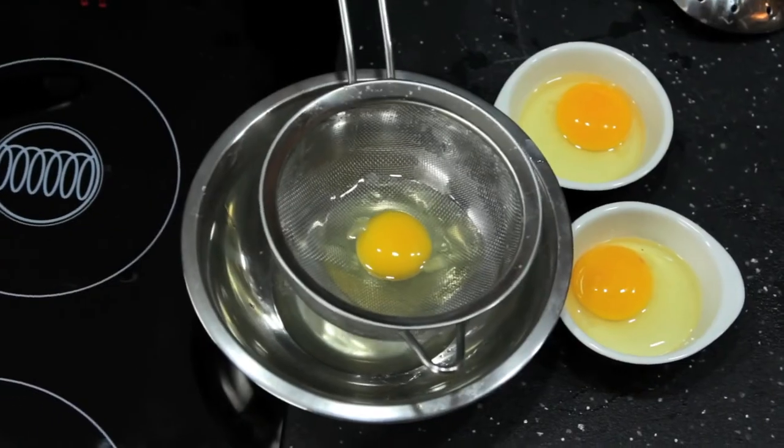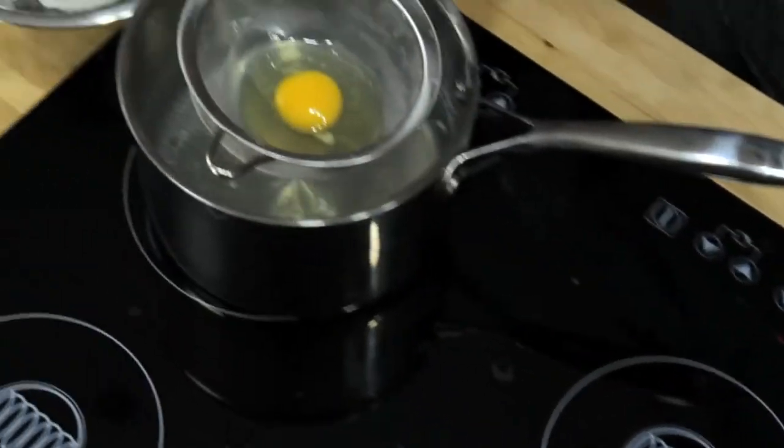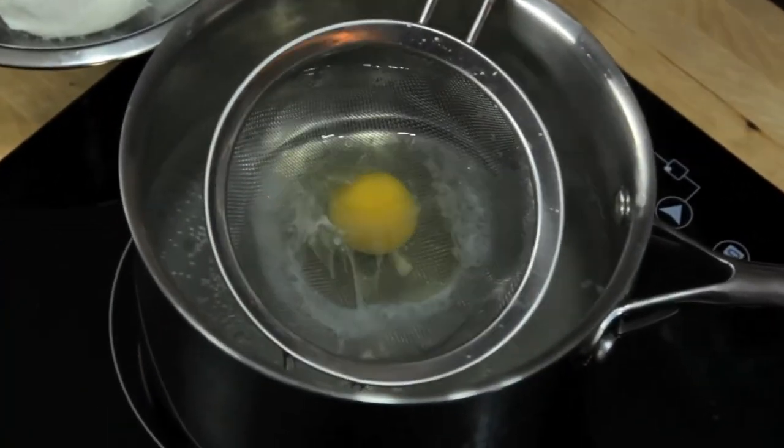Using a round-bottom strainer and this rolling motion is going to help ensure that you get a nice, tight poached egg that's, well, that's egg-shaped. If you want to cook multiple eggs, just make sure that you have them cracked into separate dishes and ready to go.